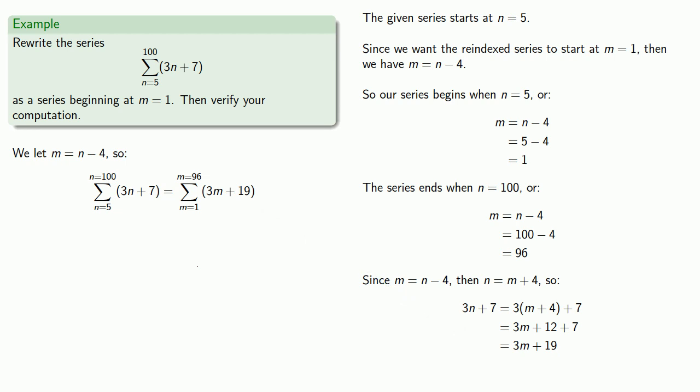Now, having gone through all of this work, let's make sure that our two series are the same thing. They should have the same terms in the same order. Our series begins with n equals 5. So the first term will be 3n plus 7 when n equals 5. Our next term will be 3n plus 7 when n equals 6. Our next term will be when n equals 7. And let's skip to the last term when n equals 100. That last term will be 307.